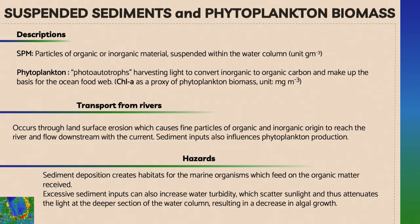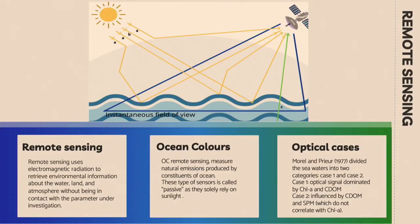The transport from the river is pretty straightforward. It occurs through land surface erosion, which causes fine particles to go into the water and be transported downstream to the sea. Sediment inputs also influence phytoplankton production. The reason I decided to study this is because of the numerous implications that SPM has on marine ecosystems. Sediment deposition creates habitats for marine organisms, but excessive sediment inputs can increase water turbidity, which decreases light scattered into the water, resulting in a decrease of algal growth.